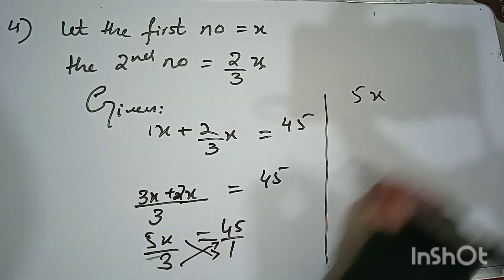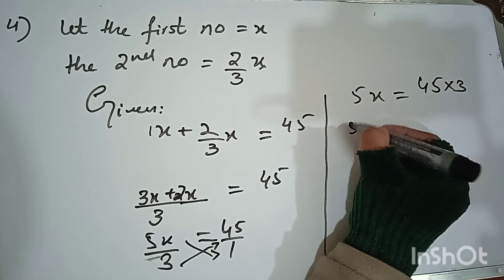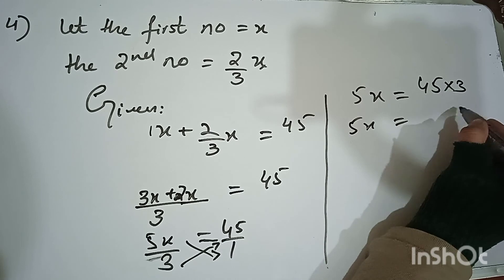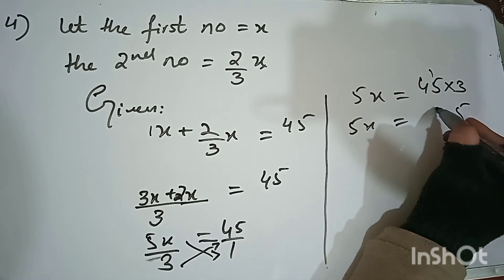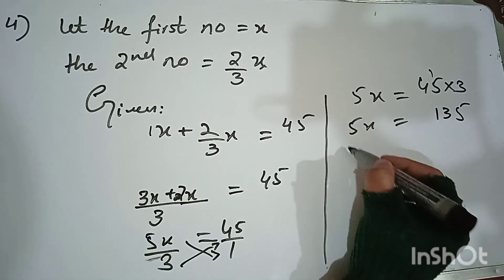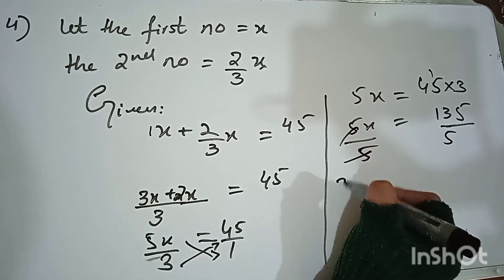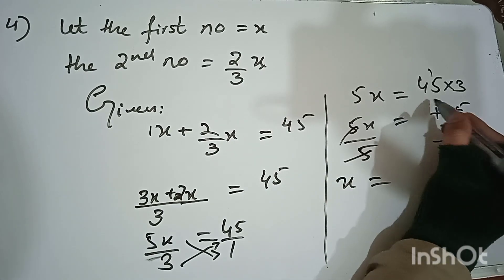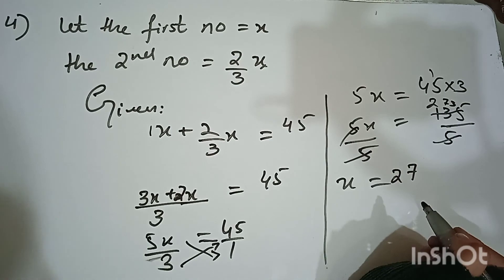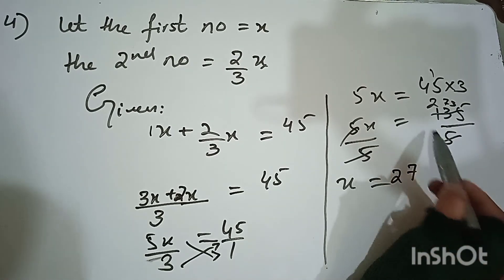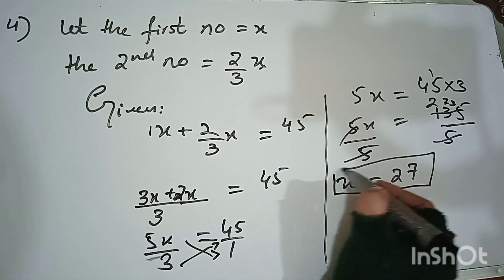From 5x = 135, we multiply 45 by 3 to get 135. Then dividing both sides by 5: x = 135 ÷ 5 = 27. So the first number is 27.